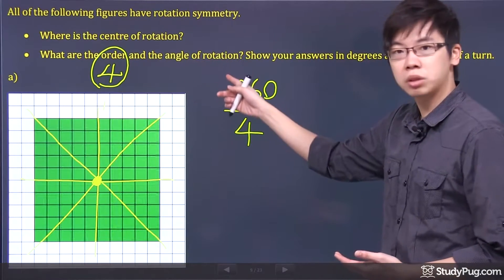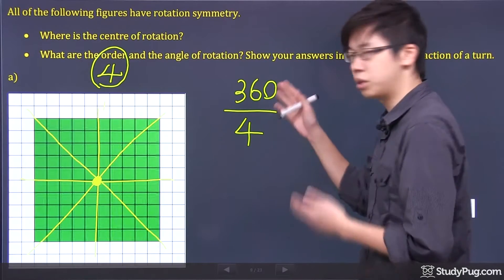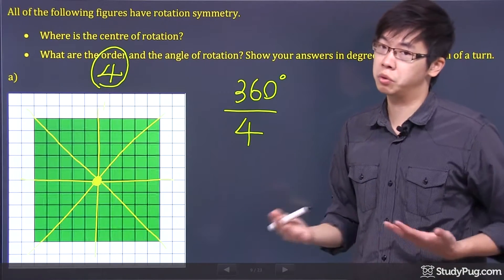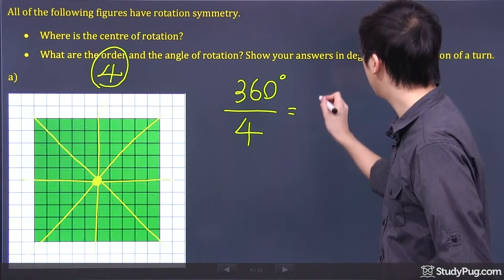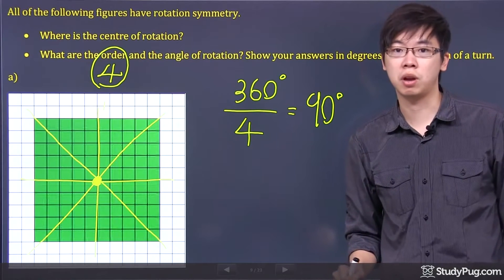So to calculate the angle of rotation, just take the 360, which is one complete turn. It's always 360, by the way. And divide by four, the orders that you have. Now, 360 divided by four, using your calculator, you get yourself 90 degrees. So that's your angle rotation right there, 90 degrees.